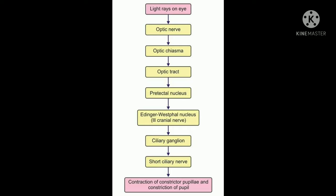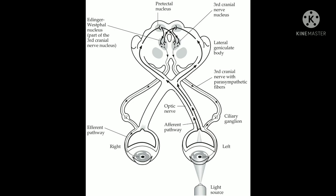This pupillary constriction is called meiosis. This is the pathway of direct light reflex. Simultaneously, we have to observe the direct light reflex of the other eye. Pupillary constriction is seen. This is the pathway of the pupillary light reflex. We also have to note that when the light is switched off, the pupil rapidly dilates to its previous diameter.